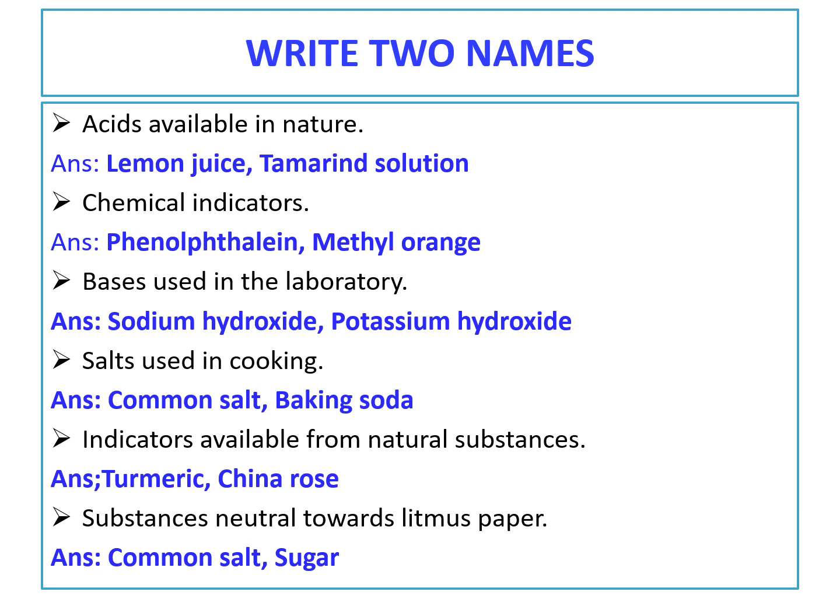These are the write-two-names questions. Students, you have to write all these objective type questions in your notebook and learn. Yesterday I gave MCQ — multiple choice questions — and answer in one word. Today I am giving fill in the blanks, write two names, and true or false. Please write all these in your notebook and learn.